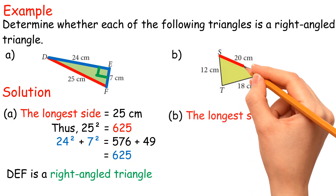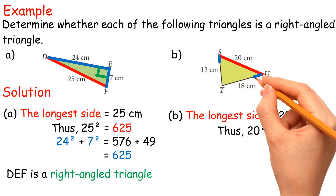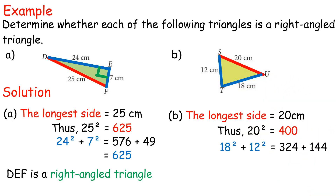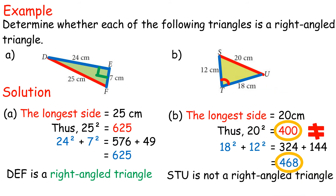Solution D. The longest side = 20 centimeters. Thus, 20² = 400. 18² + 12² = 324 + 144 = 468. Hence, triangle STU is not a right-angled triangle.